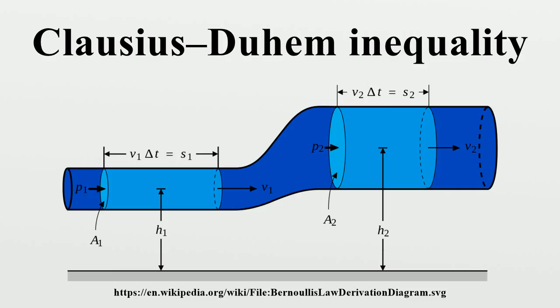σ is the Cauchy stress and is the gradient of the velocity. This inequality incorporates the balance of energy and the balance of linear and angular momentum into the expression for the Clausius-Duhem inequality.